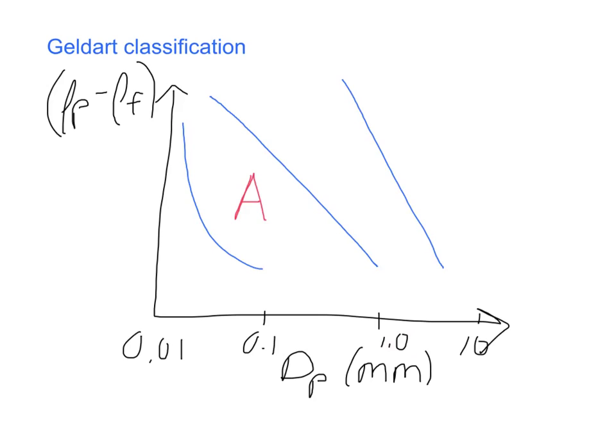The next classification of powder is type B, and type B would be up here between these two lines. This tends to be for particles which are a little bit on the larger side than the ones in type A, and these type of particles only give rise to bubbling fluidization. There is no non-bubbling fluidization at this point.